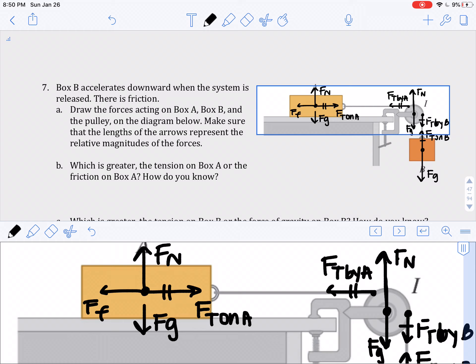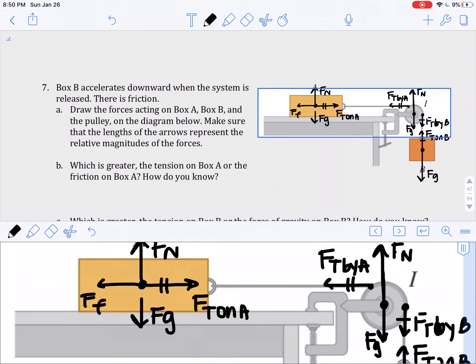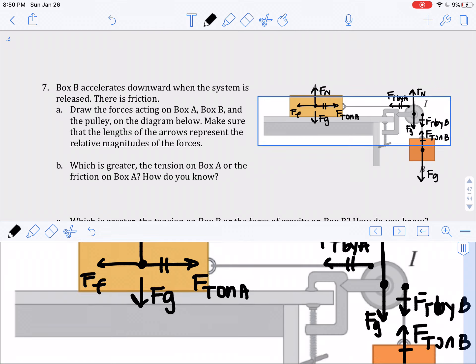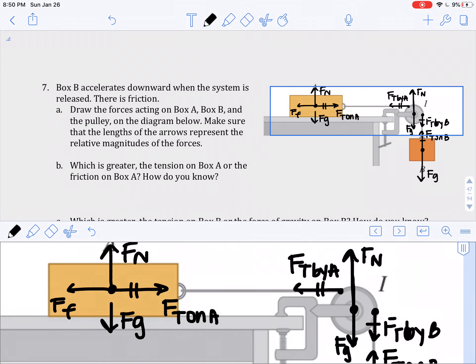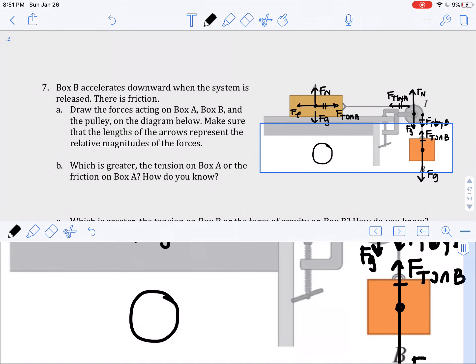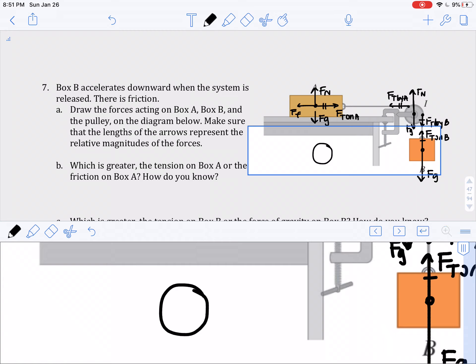So the next question is, which force needs to be bigger? FT by B or FT by A? And I think a helpful way of figuring this out is really zooming in on that pulley. So if we let go of this system, how is the pulley going to rotate? So the pulley should rotate this direction, so clockwise. So that means we need a clockwise torque that's bigger than the counterclockwise torque.